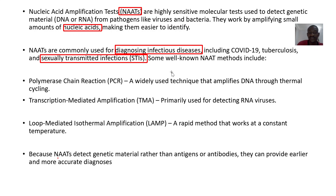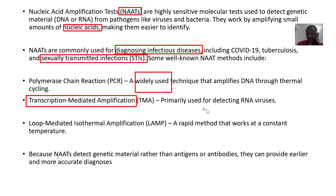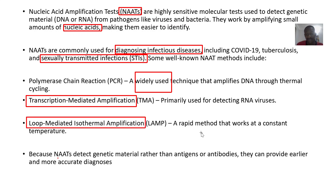The nucleic acid amplification test is also subdivided into different methods. We have Polymerase Chain Reaction (PCR), a widely used technique that amplifies DNA through thermal cycling. There is also Transcription-Mediated Amplification (TMA), used for RNA viruses, and Loop-Mediated Isothermal Amplification (LAMP), a rapid method that works at a constant temperature.